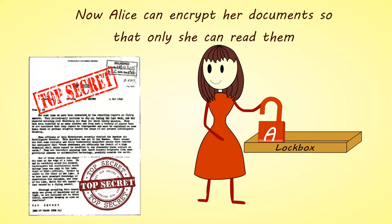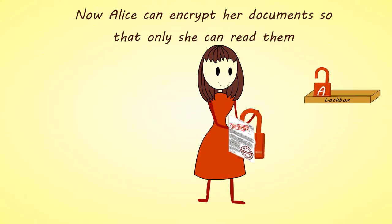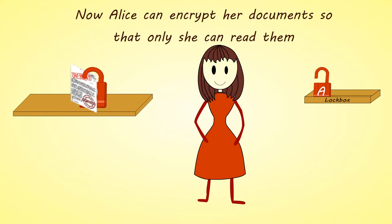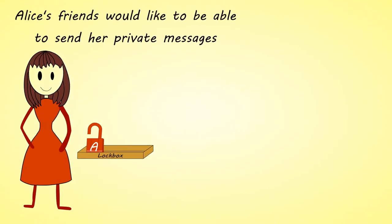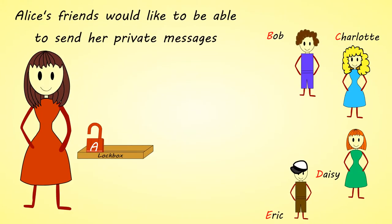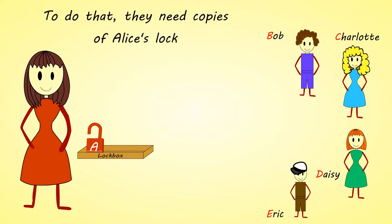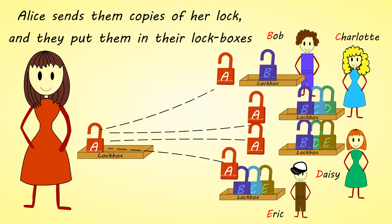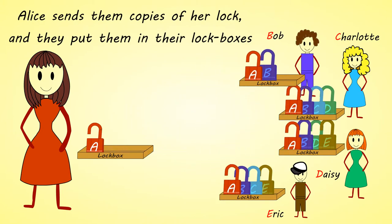Now Alice can encrypt her documents so that only she can read them. Alice's friends would like to be able to send her private messages. To do that, they need copies of Alice's lock. Alice sends them copies of her lock, and they put them in their lockboxes.